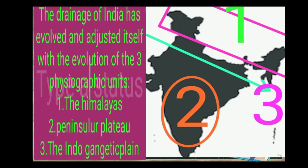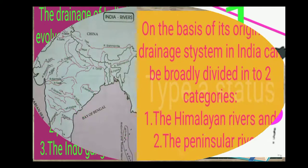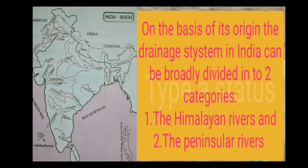On the Indian map, we can observe the Himalayas, the Peninsular Plateau, and the Indo-Gangetic Plain. On the basis of its origin, the drainage system in India can be broadly divided into two categories: number one, Himalayan Rivers; and number two, Peninsular Plateau rivers.